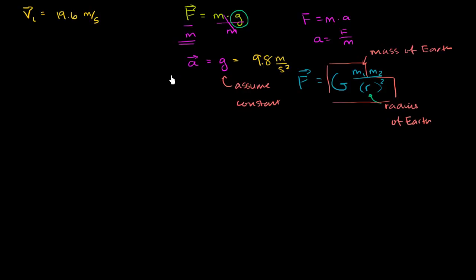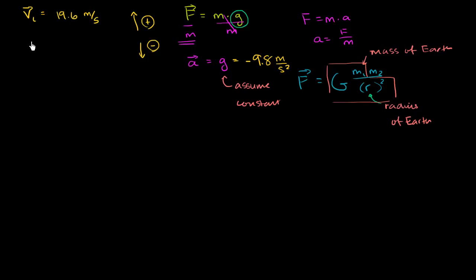These are vector quantities. When we throw things up in the air, the convention is that upward motion gets a positive value and downward motion gets a negative value. For an object in free fall, gravity accelerates it downward, so little g, with its direction included, is negative 9.8 meters per second squared. So the acceleration due to gravity is negative 9.8 meters per second squared.